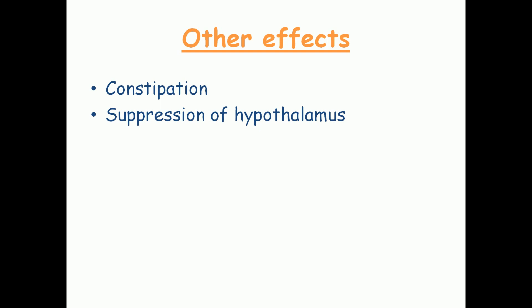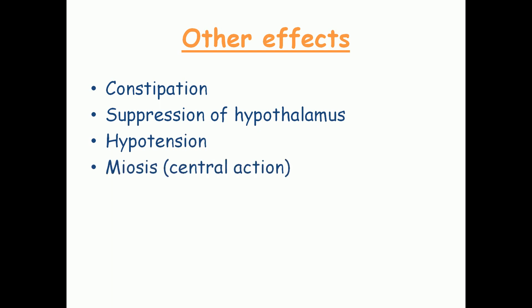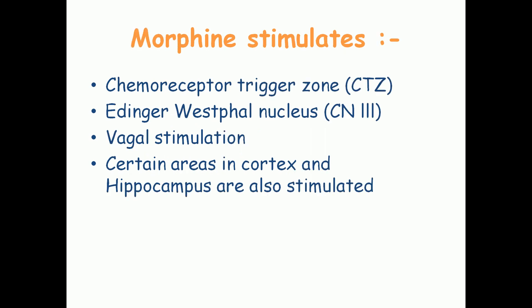Other effects of morphine include causing constipation by acting on GI smooth muscles, suppression of the hypothalamus leading to decreased anterior pituitary hormones, hypotension, and miosis — constriction of the pupil. Miosis is a central action: topical application to the eye has no effect, but systemic administration causes morphine to act on the cranial nerve 3 nucleus, producing miosis. Morphine also stimulates the chemoreceptor trigger zone (CTZ), the Edinger-Westphal nucleus, and certain areas in the cortex and hippocampus.